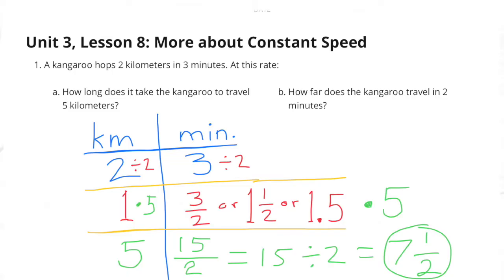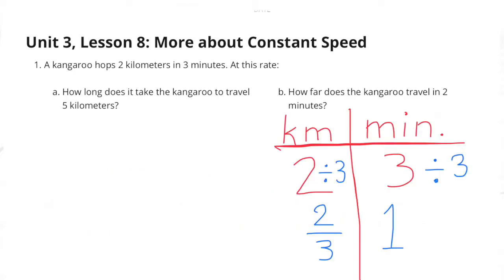Let's multiply the one kilometer times five to get five kilometers, since they were wondering how long it took the kangaroo to travel five kilometers. Now let's multiply the minutes by five: one and a half minutes times five equals seven and a half minutes. Now we know that it takes the kangaroo seven and a half minutes to travel five kilometers.